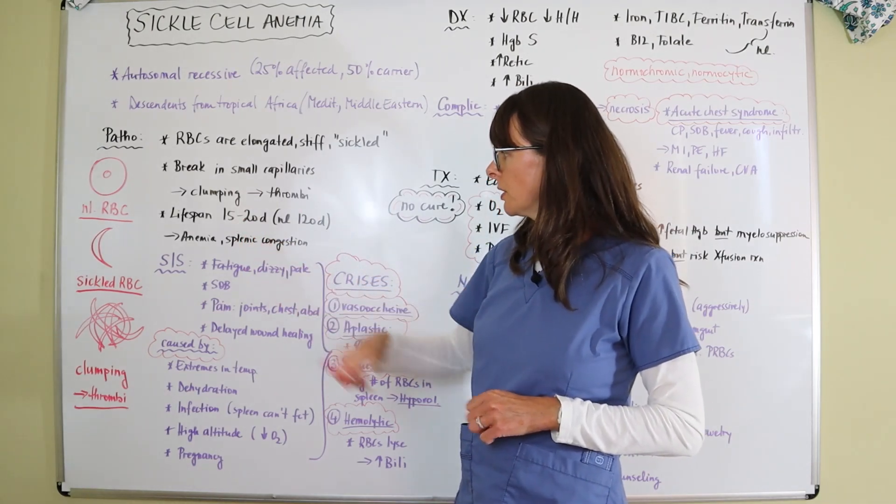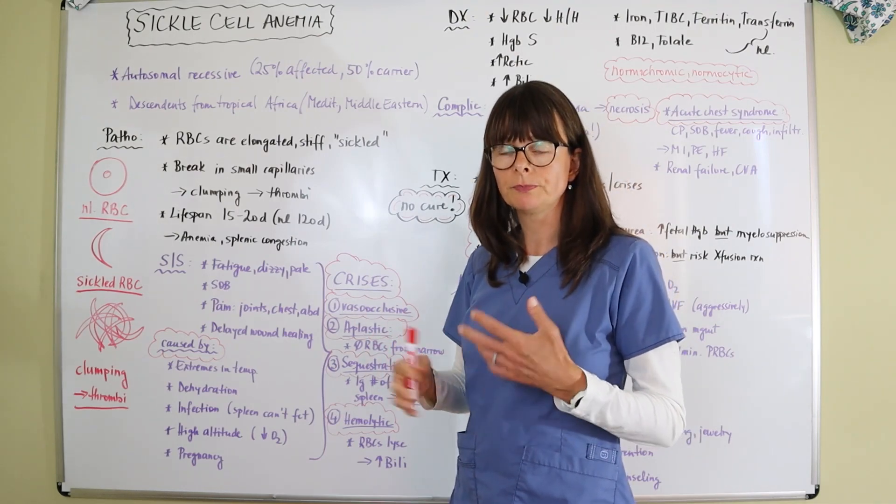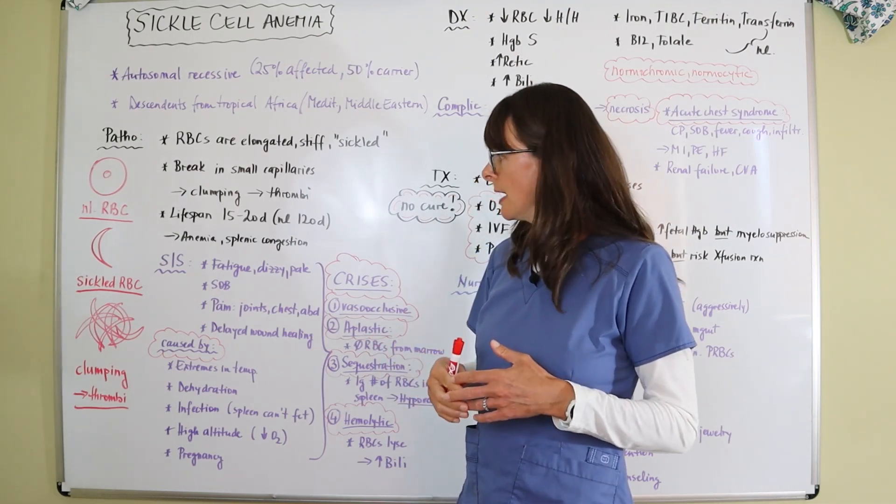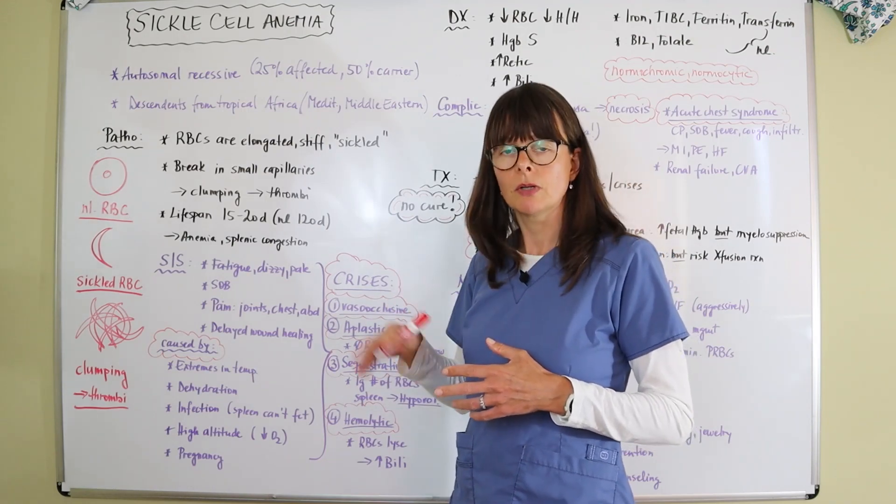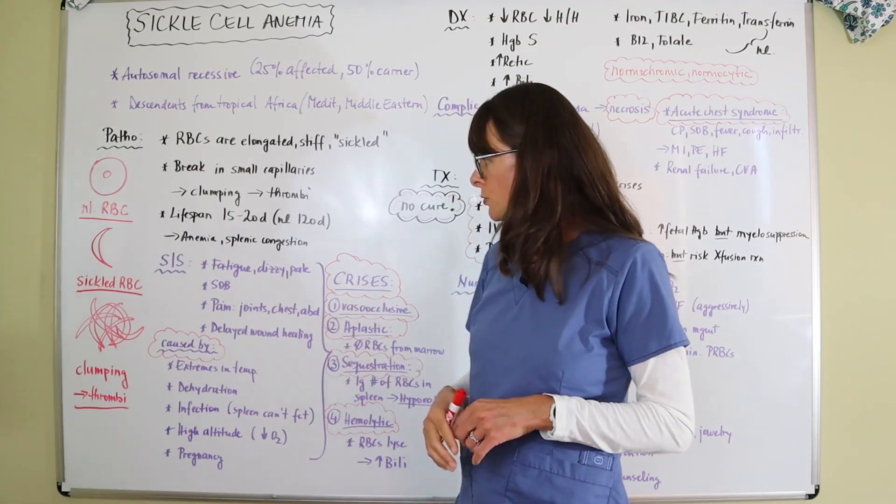The spleen gets congested because the spleen tends to recycle these red blood cells, and so it's on hyperdrive because we're cycling these cells out more frequently than usual.